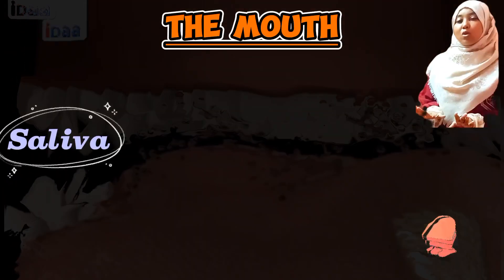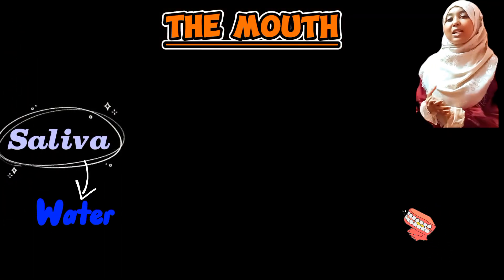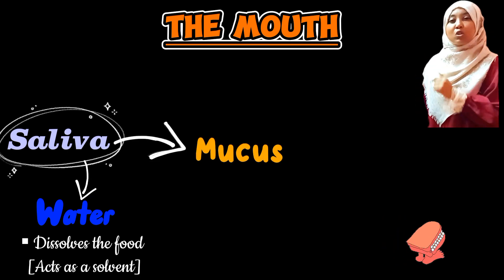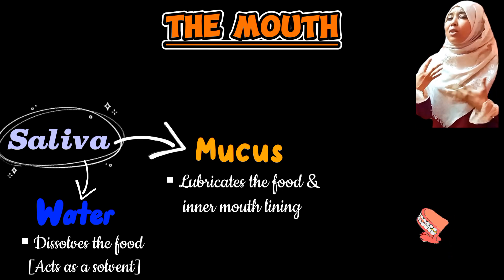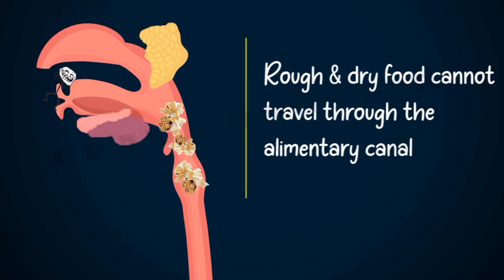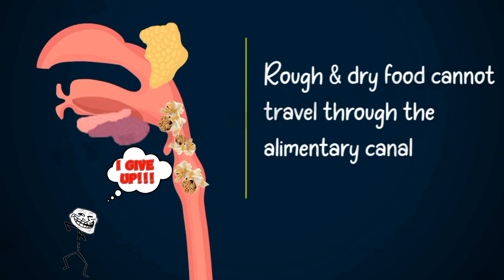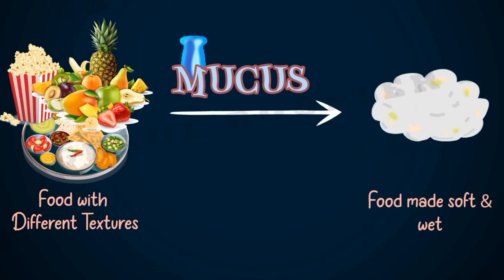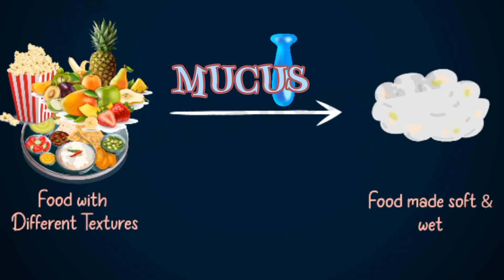Water in the saliva dissolves the food substance. Mucus lubricates the food substance, reducing friction. Imagine ingesting dry food — like a piece of chapati — with no saliva in your mouth, just a dry cavity. It would be very uncomfortable to chew and move that food around. Thankfully, mucus lubricates the food, making it much easier to move around the mouth and swallow.